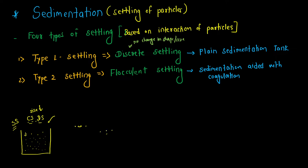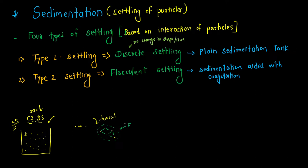We add a chemical to the colloidal solids. Due to this chemical, there will be inter-particle bridging — meaning these particles will stick to each other. The five individual particles become one big particle. This big particle, formed due to the addition of the chemical, is called a flock. As this particle is bigger, its weight is also higher, so it settles easily. This is what we call flocculant settling. The chemical used for inter-particle bridging is called a coagulant.